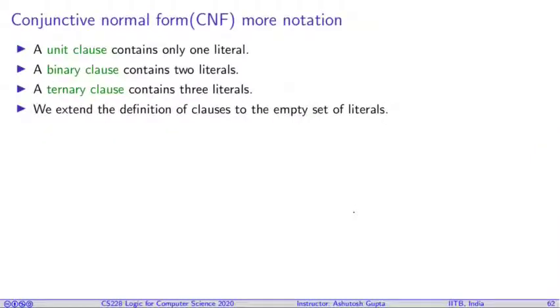Now, let's look at a few more notation about conjunctive normal form. If you have a single literal, for example, not P, you call it unit clause. If you have exactly two literals in a clause, then you call it binary clause. If you have three literals, for example, not P or Q or R, then you call it ternary clause.